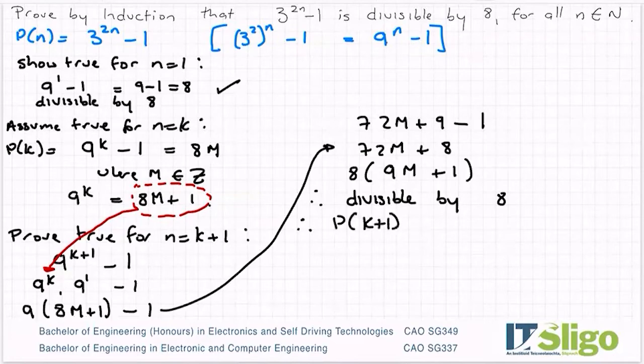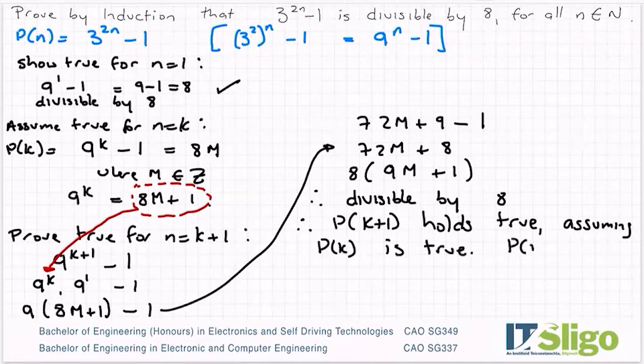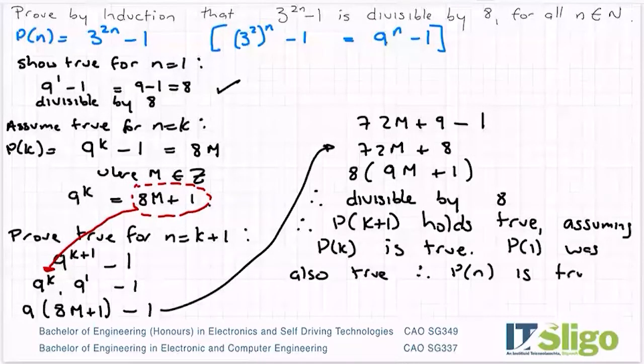P(k+1) holds true assuming P(k) is true. P(1) was also true. Therefore P(n) is true for all n ∈ N.